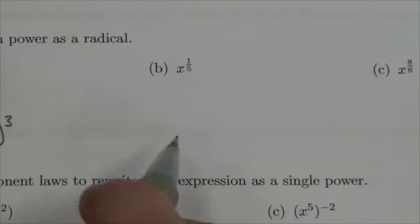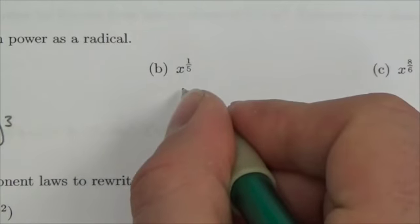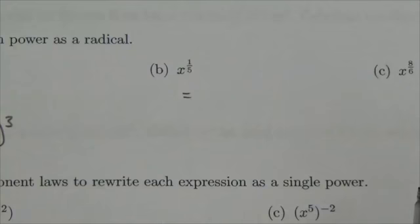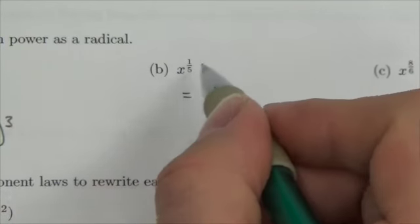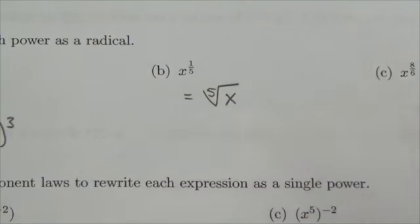This next one right here, x to the 1/5, well notice that the numerator is just 1 and that is the power on the base there, in which case it's just 1, it's not doing anything. But the 5 here is the root index, so this is the fifth root of x, and there's not really much else that can be done, that's it.